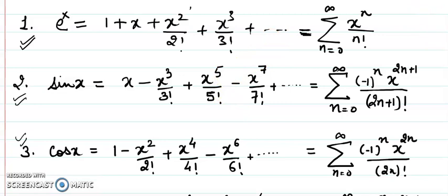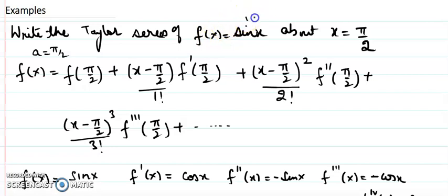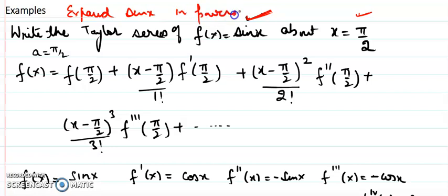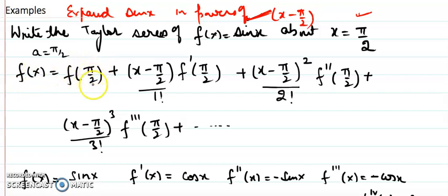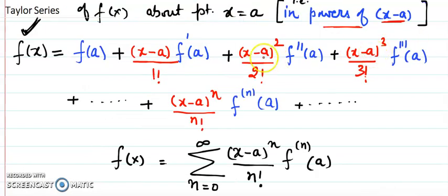Now let's switch to the main question: expand sin x about the point pi by 2, or equivalently, expand sin x in powers of (x minus pi by 2). Using the Taylor series formula with a equals pi by 2, we need f(pi/2), f'(pi/2), f''(pi/2), and so on. The terms (x minus a) become (x minus pi/2) throughout the formula.